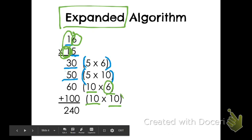Then I do the 10 times the number that was in the 10's place. The 6 was in the 1's place, and the 1 is in the 10's place. And then we add all of these together to get our answer of 240.